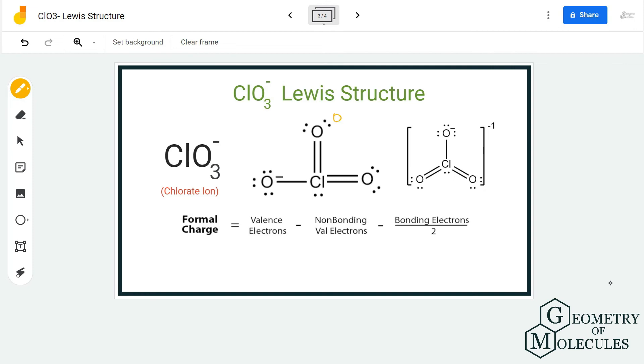these two oxygen atoms and the chlorine atom has a charge of zero, whereas this oxygen atom which is sharing just one valence electron with chlorine has a formal charge of minus one, which is fine because we already have a charge of minus one over here.